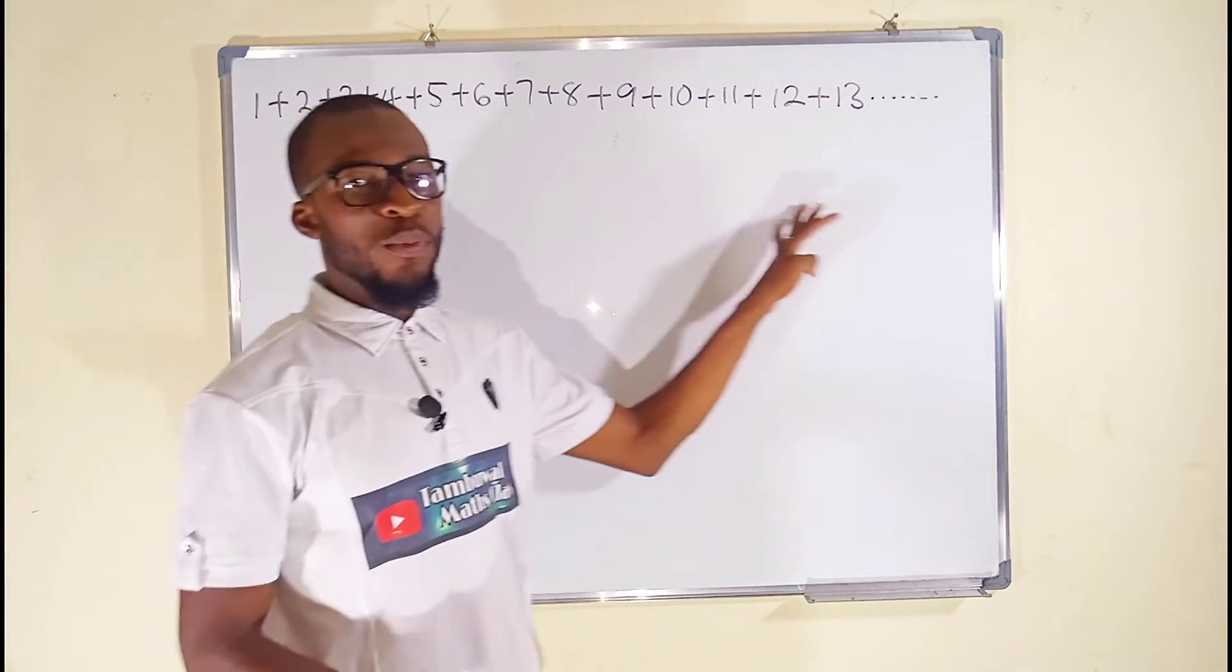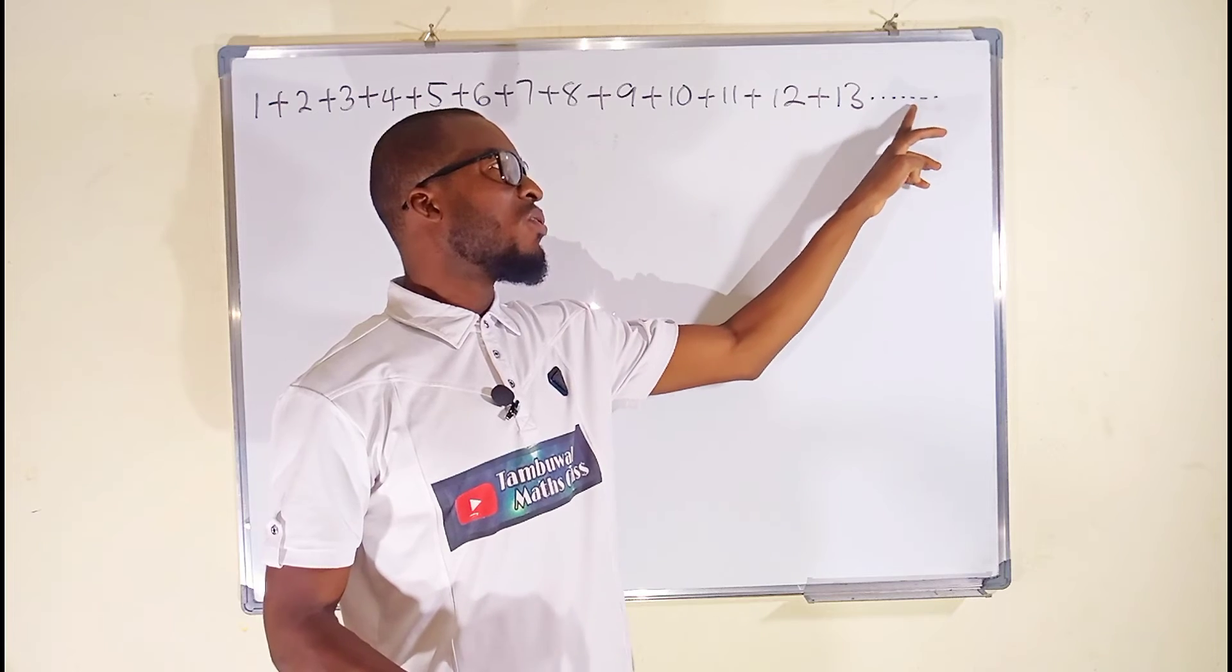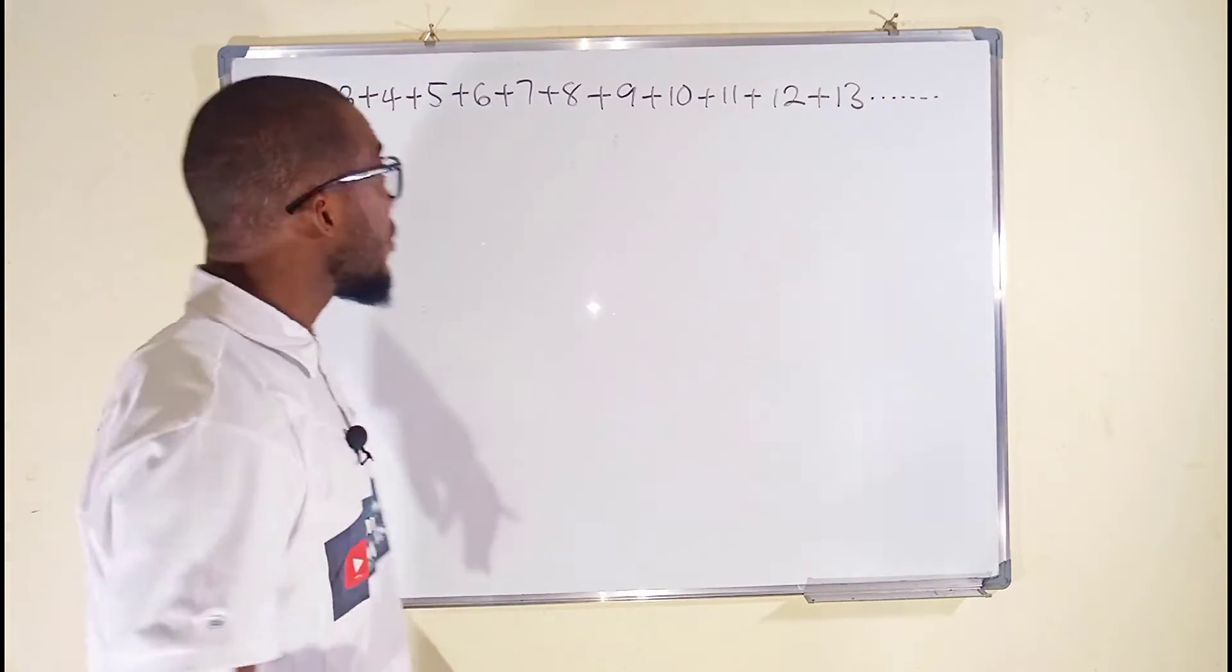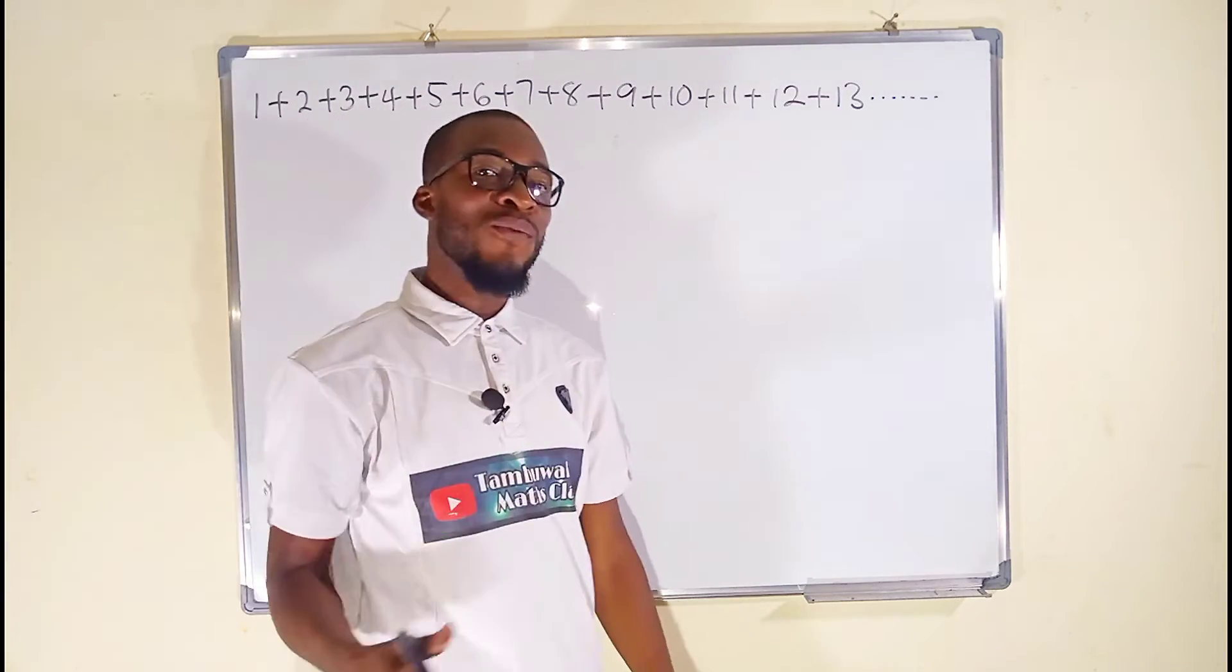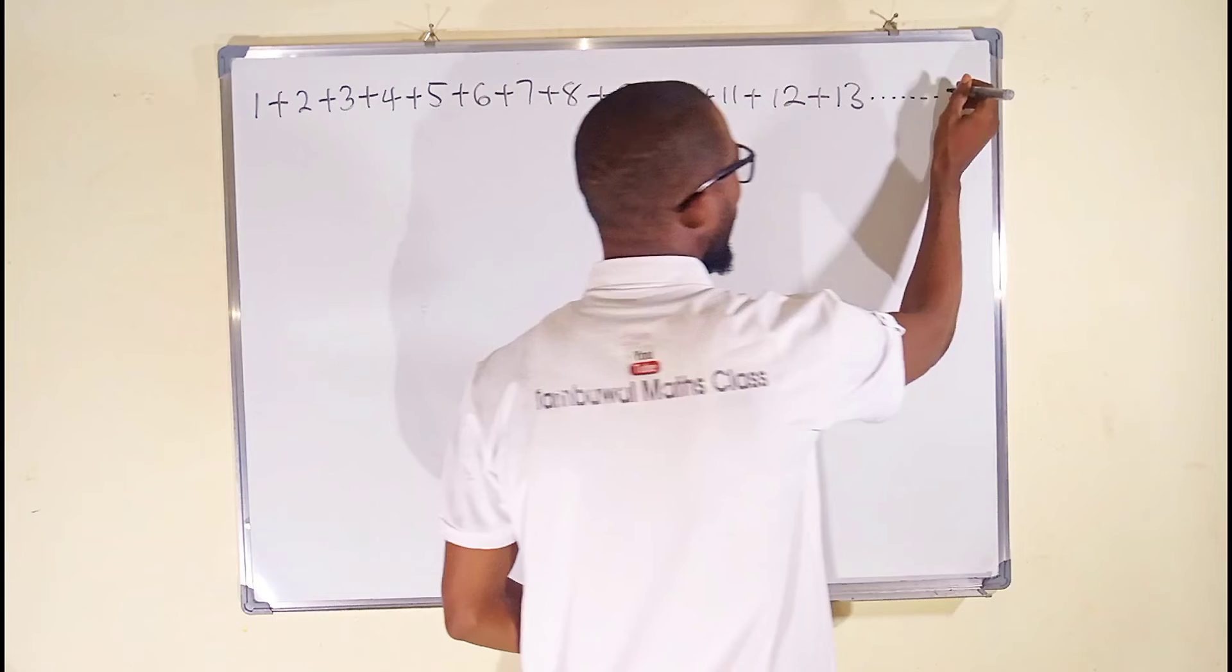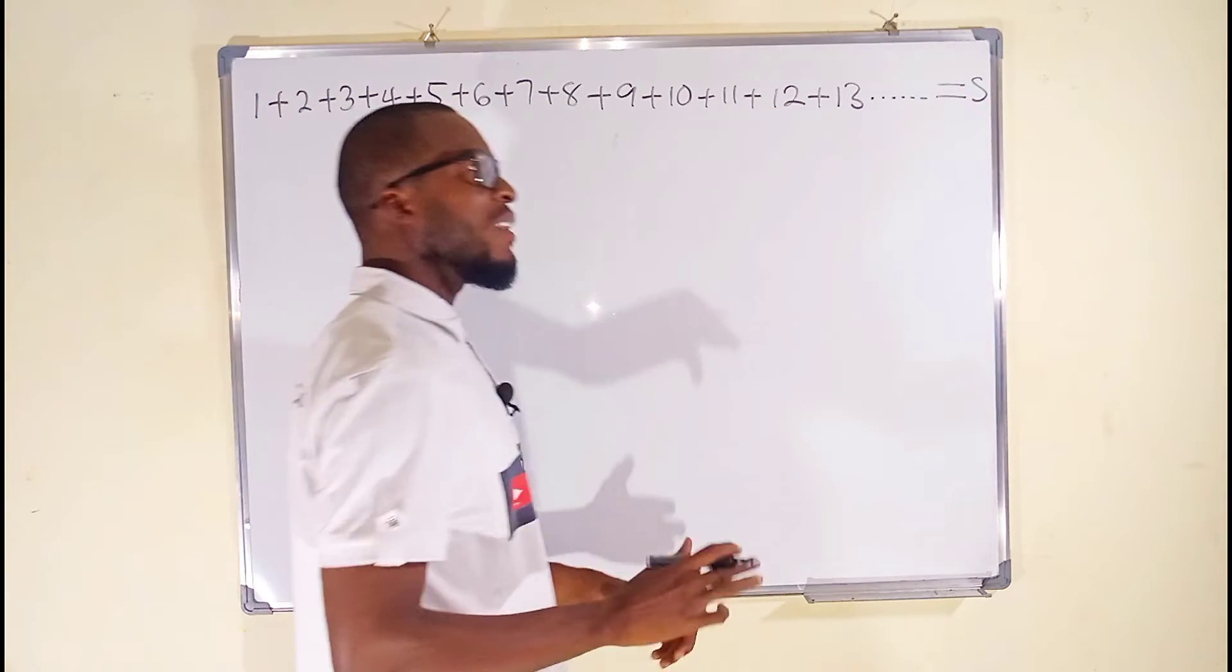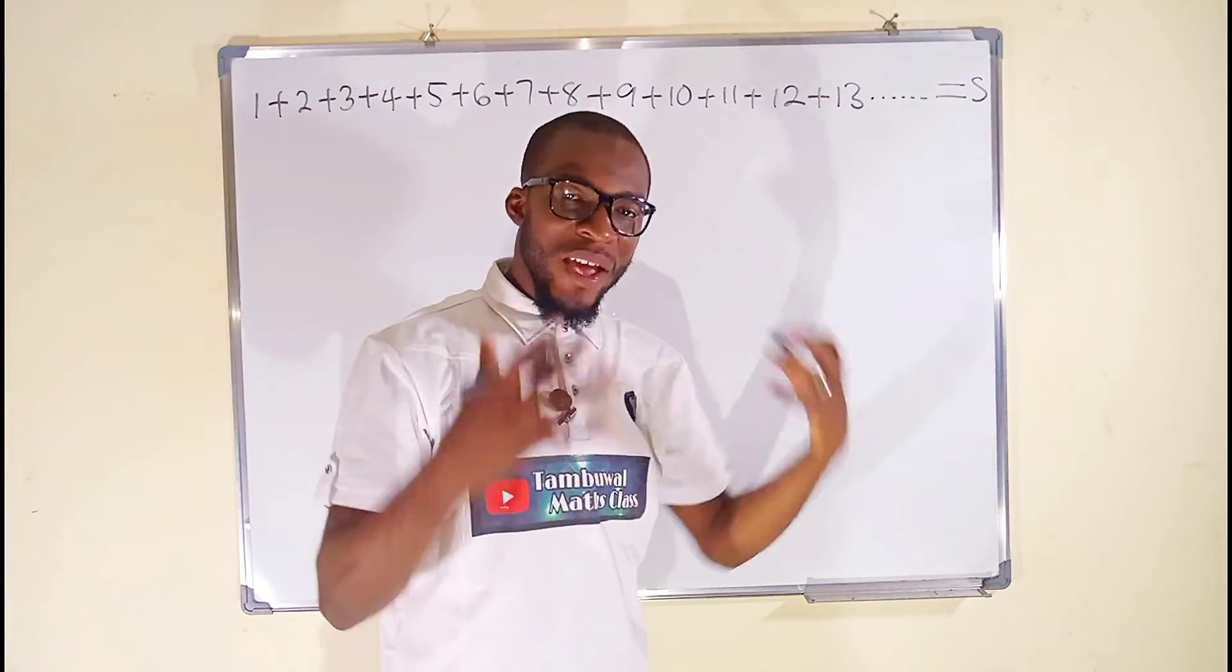You can see my board cannot support all the natural numbers. This is why I stopped at 13. But this dot, dot, dot is telling us that the numbers keep on increasing in ascending order. Because you can see 1, 2, 3, after 13, they have difference of 1. So since I cannot write all the natural numbers, let me set this to be equal to S. Such that in the end, we are going to solve for S. Whatever the value of S is, is said to be the sum of all the natural numbers.